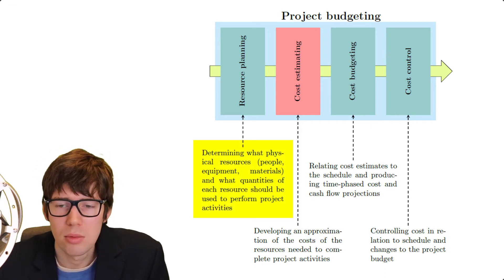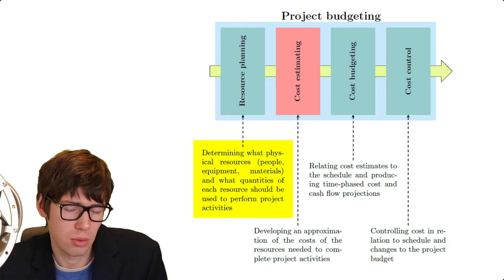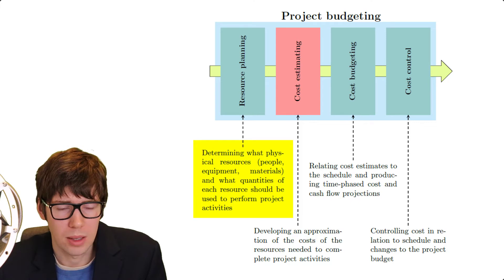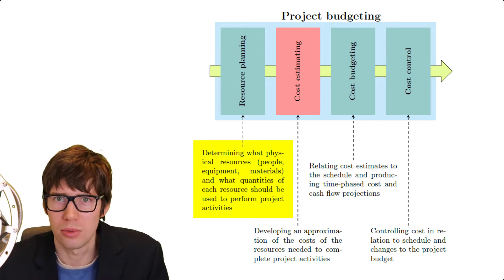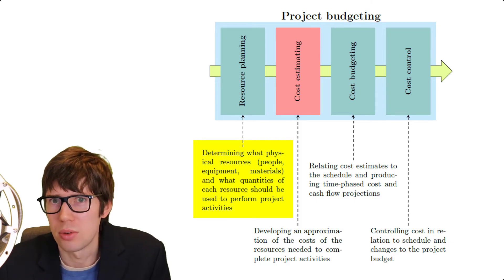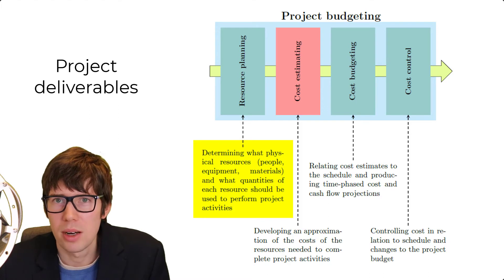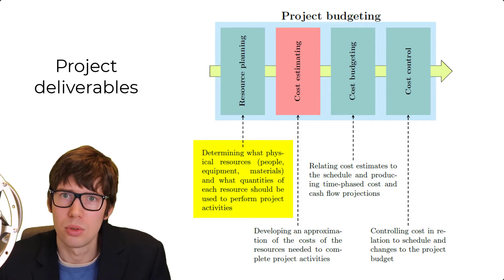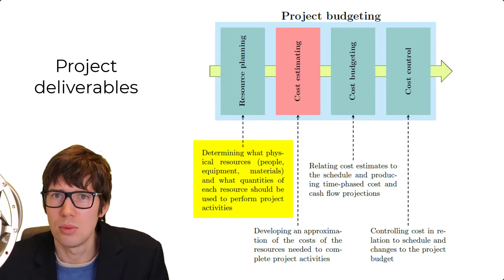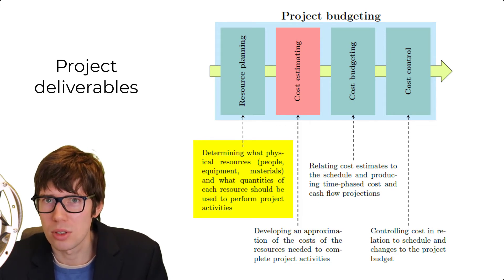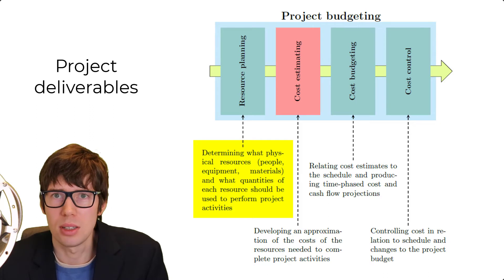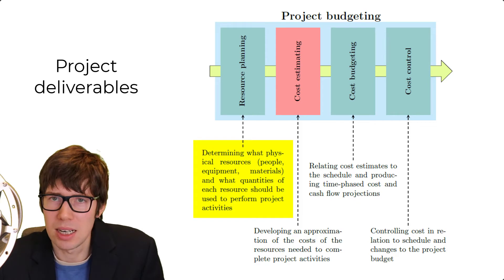First, we have what Gardner refers to as resource planning — other sources call it resource analysis or resource estimation. What we need to realize is that a project is not done for fun; we do projects in order to accomplish or achieve something, usually to create some kind of product or provide some kind of service. Whatever it is we want to accomplish, we refer to that as project deliverables. Resource planning is about identifying what resources we need to use in order to bring about these project deliverables.